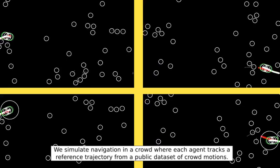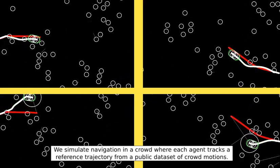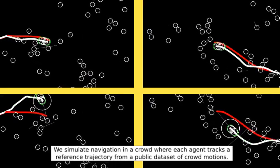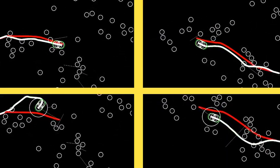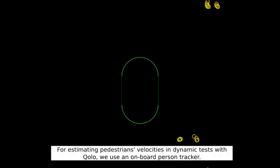We simulate navigation in a crowd where each agent tracks a reference trajectory from a public dataset of crowd motions. The quantitative evaluation of 430 configurations shows that RDS leads to better tracking while both methods prevent any collisions.